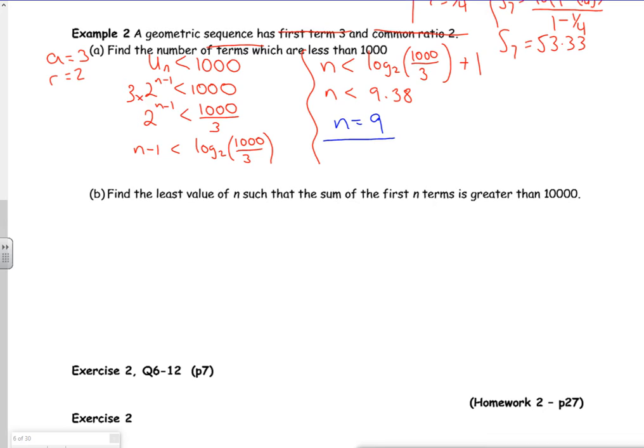The next one then. So part B says, find the least value of n such that the sum of the first n terms is greater than 10,000.